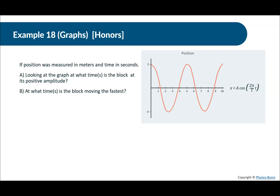Example problem: If position is measured in meters and time in seconds, at what times in seconds is the block at its positive amplitude? We can see it's at its positive amplitude at zero, five, and ten seconds. Every five seconds it's going to be at its positive amplitude.